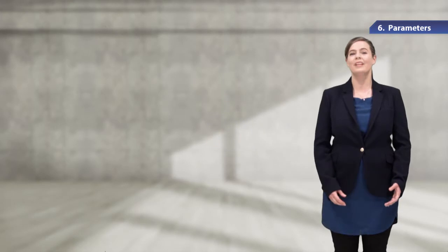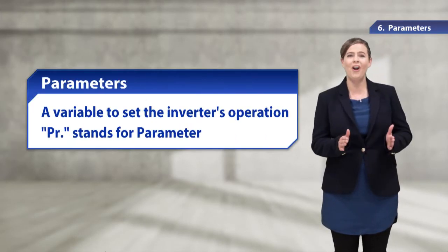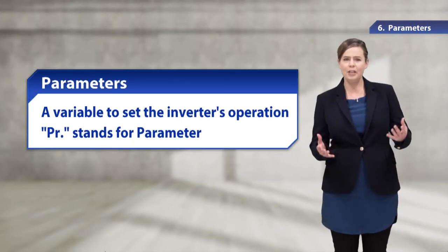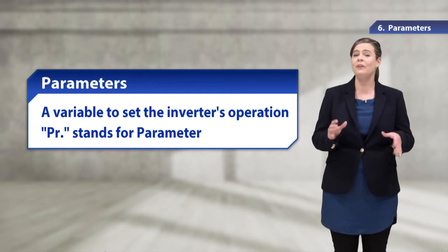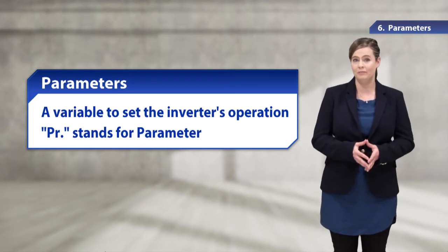To set an inverter, we need to understand the parameters. A parameter is a variable to set the inverter's operation and needs a numerical value for each setting. The parameter is abbreviated to PR, and the types and numbers of the parameters vary depending on the inverter model.